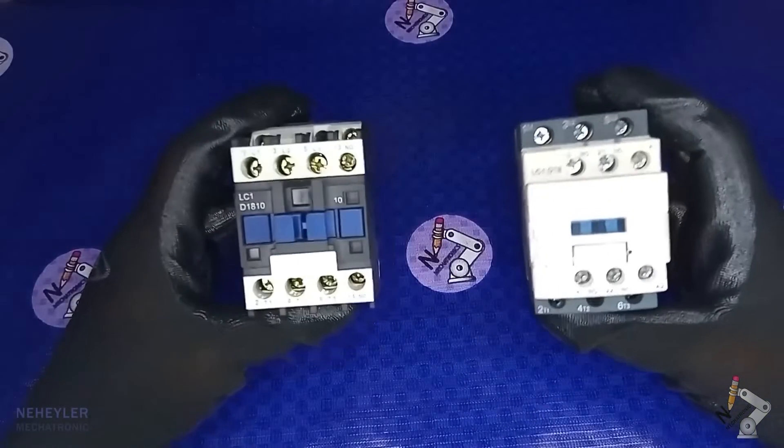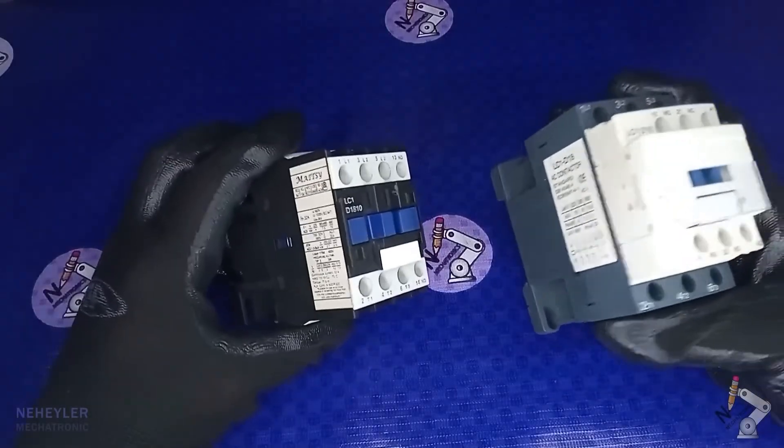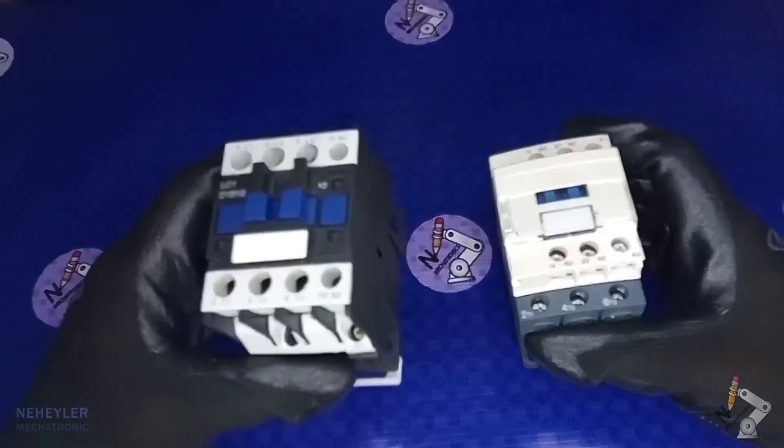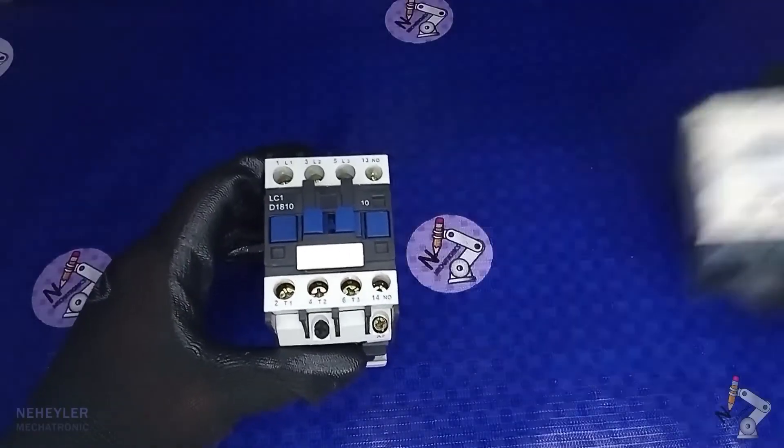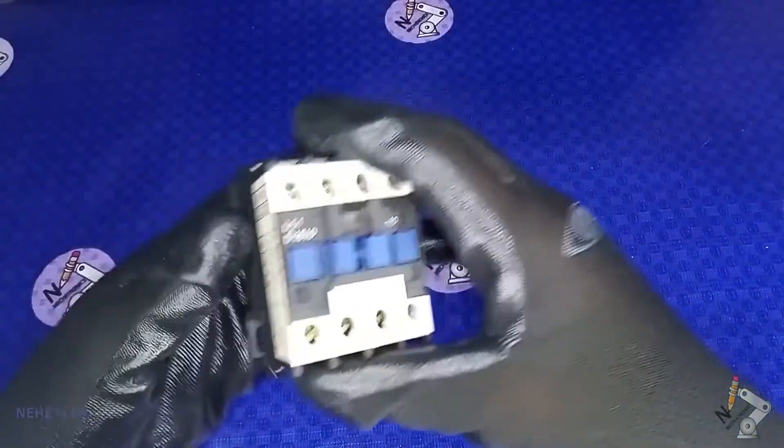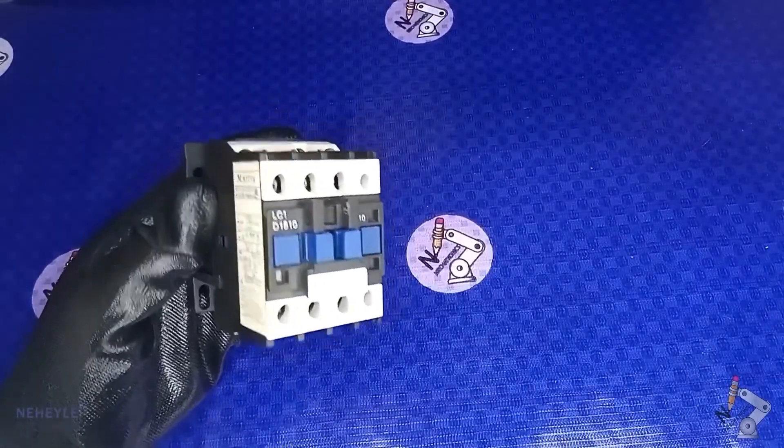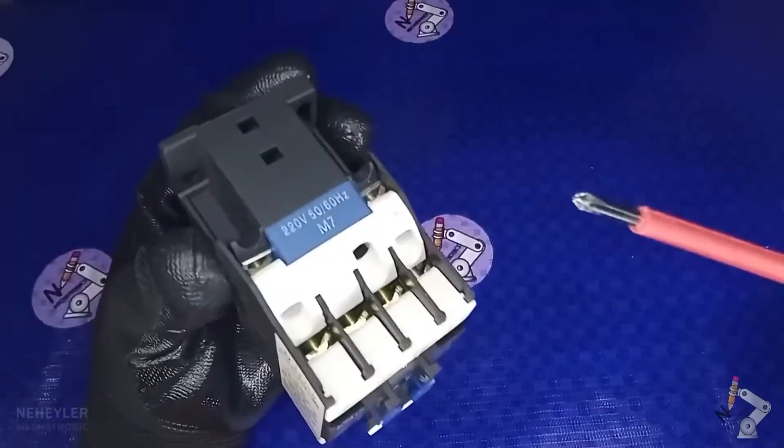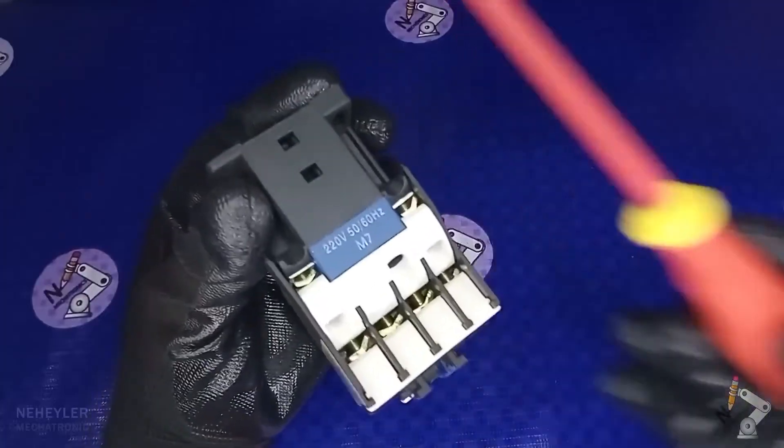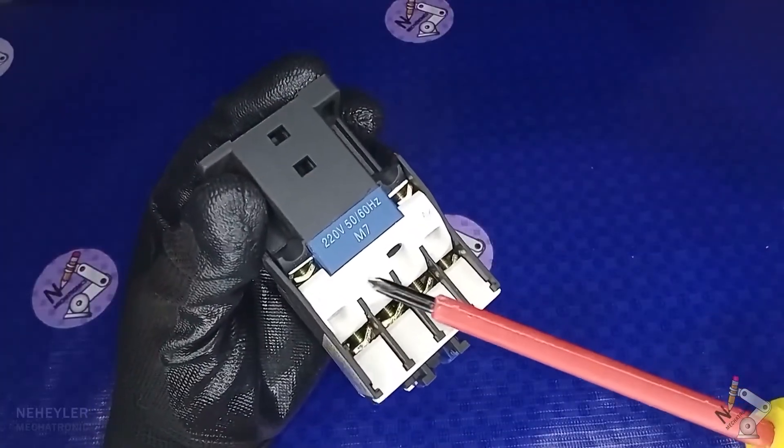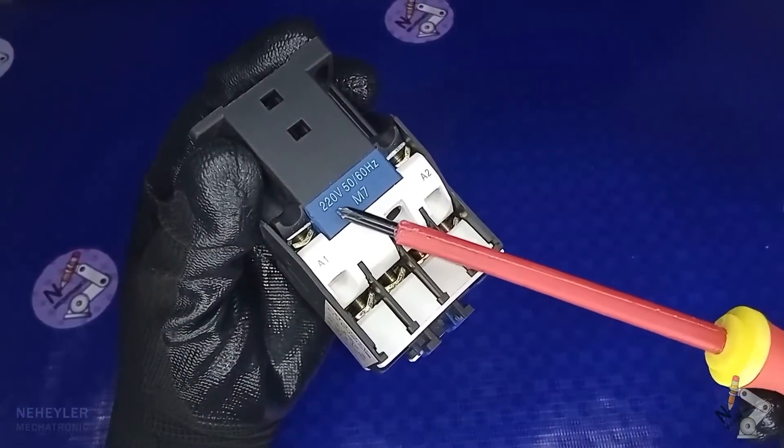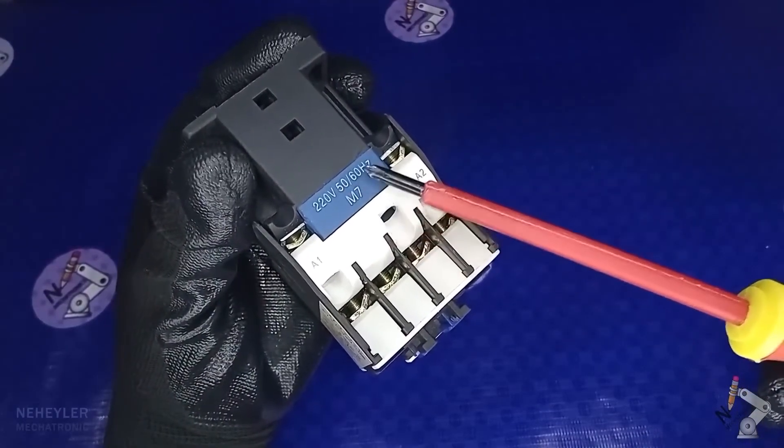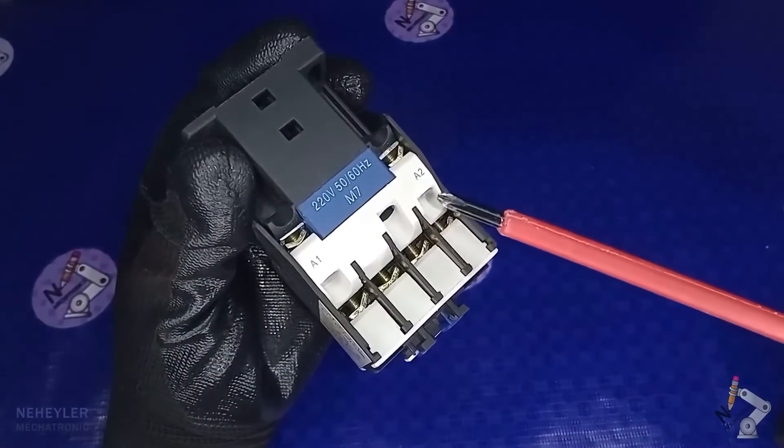Here I have two electromechanical contactors of different models and brands. Let's briefly look at the external parts of this contactor, since the other one is also similar. This device is made up of three fundamental parts and they are the coil, which is basically an electromagnet, whose connecting terminals are at the top. Here it indicates that the coil must be powered with 220 volts at 50 or 60 hertz.